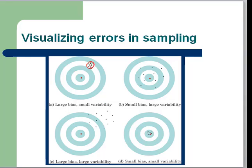It's like I've missed the target in the same direction, but all of my misses are very, very close together. They're not varied. They've got small variability.